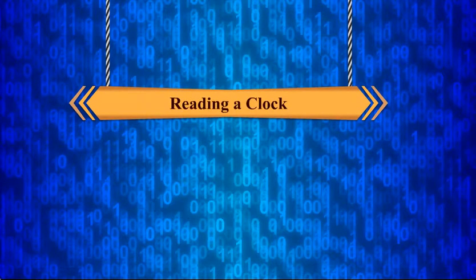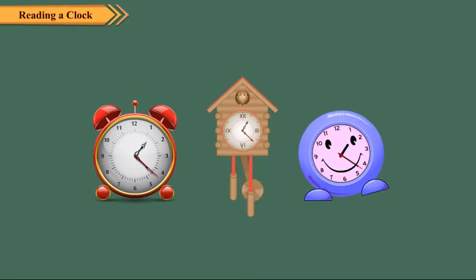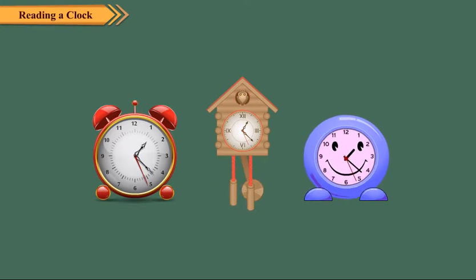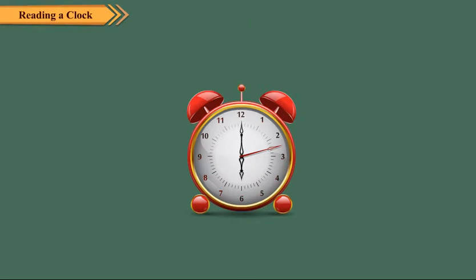Reading a Clock. Did you ever observe a clock carefully? Look at these clocks. A clock tells us time in hours and minutes. The face of the clock is called its dial. On its dial, numbers from 1 to 12 are marked at equal intervals.